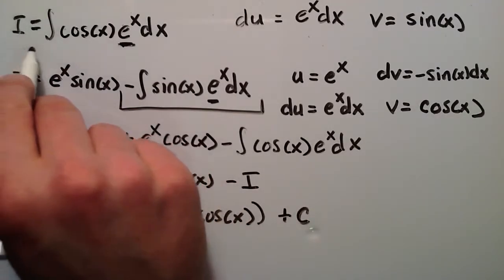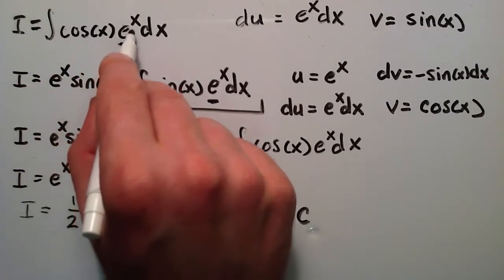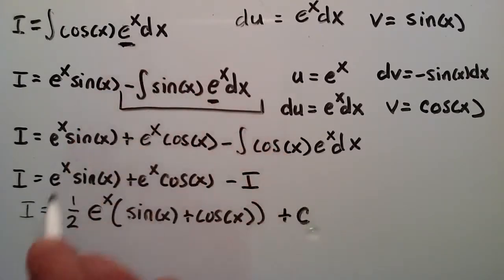So basically, the integral of cosine x e to the x with respect to x is equal to 1 half e to the x times the quantity of sine x plus cosine x plus some constant. So this is our answer right there.